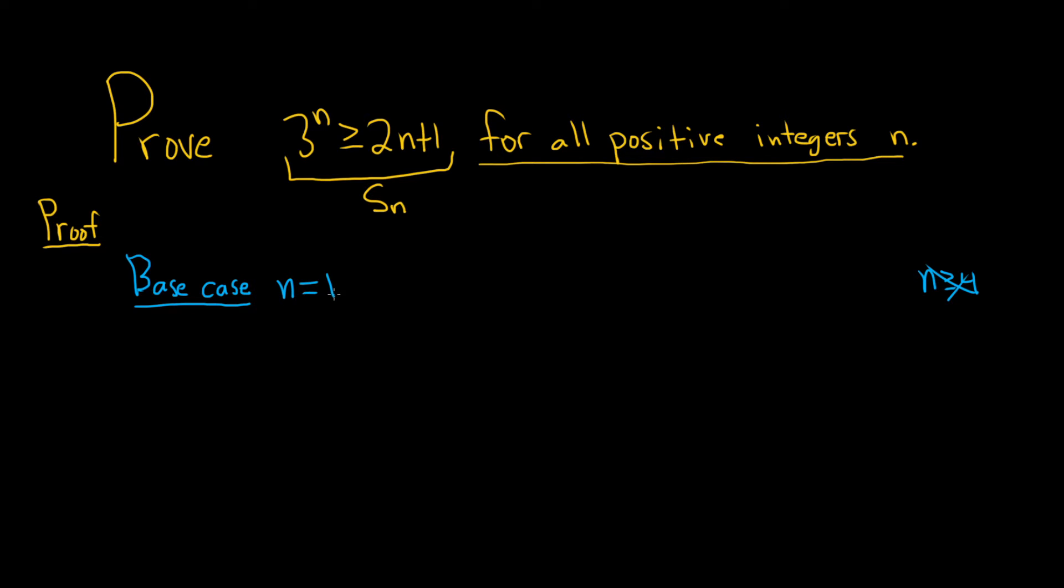So for n equals 1, you just have to plug it in and make sure it's true. So 3 to the 1 is equal to 3. And then on the right-hand side you get 2 times 1 plus 1, and that's equal to 3. So if you plug in 1 on the left you get 3, plug in 1 on the right you get 3. So 3 is equal to 3.